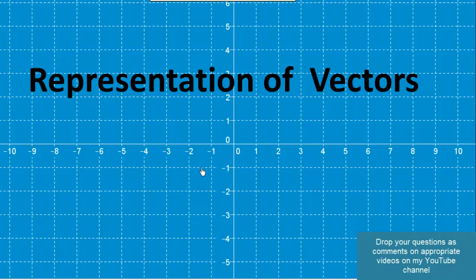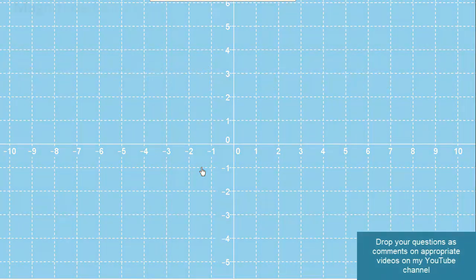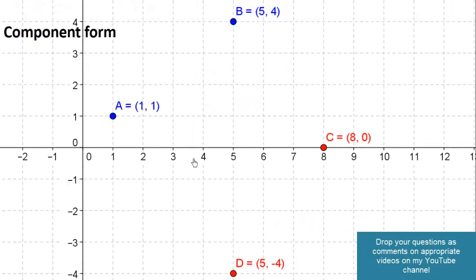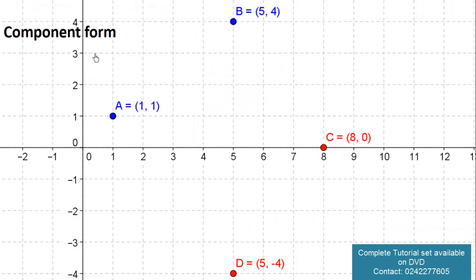Representation of vectors. We just talked about one way of representing vectors, that is the magnitude bearing form. Then we have another way of representing a vector, that is the component form.